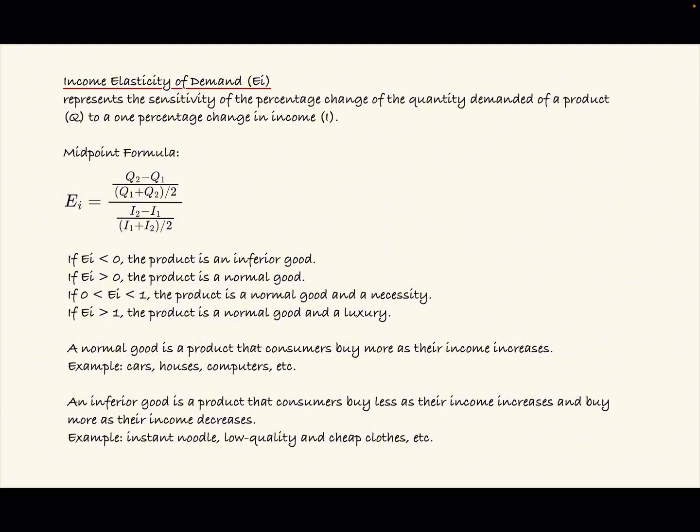The midpoint formula says that EI, or the Income Elasticity of Demand, is Q2 minus Q1, over Q1 plus Q2 over 2, all divided by I2 minus I1, over I1 plus I2 over 2.